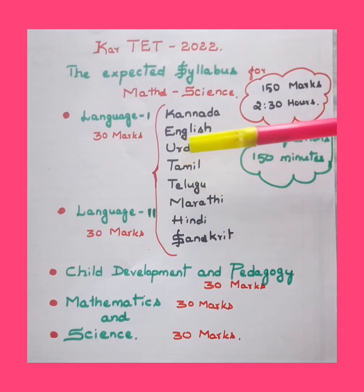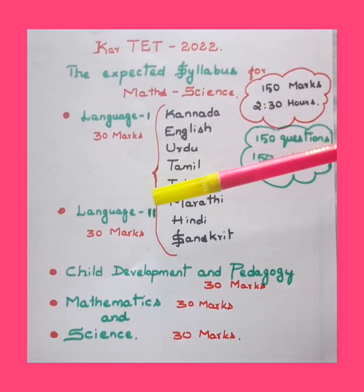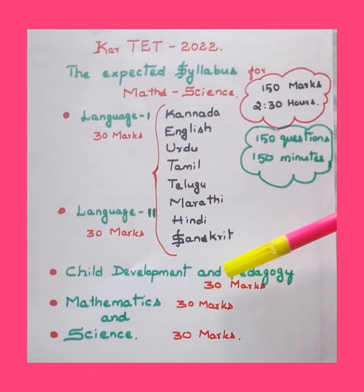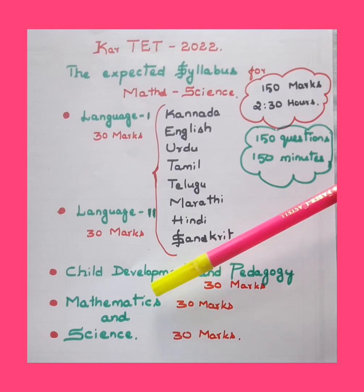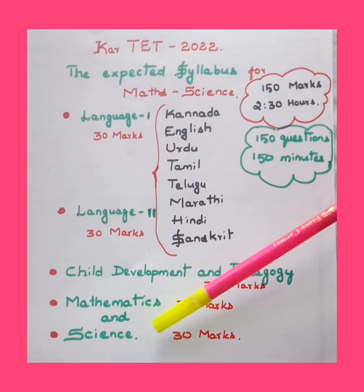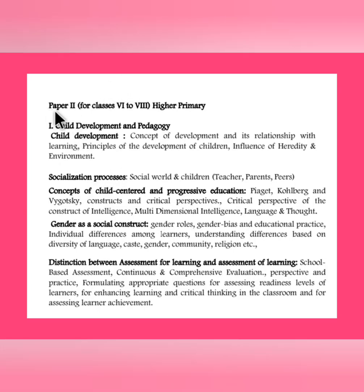All questions are multiple choice questions, so options will be there to help you answer. Moving to Child Development and Pedagogy — 30 marks — this will be psychological questions from the psychology part. Mathematics has 30 marks and science altogether 30 marks. You must give equal importance to all five subjects, as that will improve your scores in TET and obviously raise your score in the final GPS tier exam.